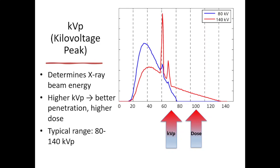Typically, 80 kVP is used for pediatric scans and adult head scans, while 120 kVP is widely used for adult body scans. It's important to note that x-ray tubes generate a spectrum of x-ray energies. When we say 140 kVP, this refers to the peak energy, but the mean energy is usually about one-third of the peak value. Here is an example of the energy spectrum for a 140 kVP and an 80 kVP spectrum, where 80 and 140 refer to the peak energy.